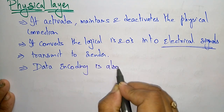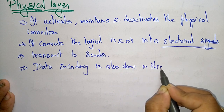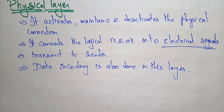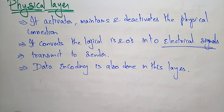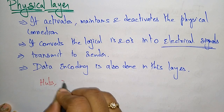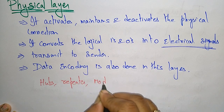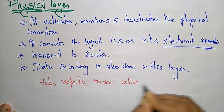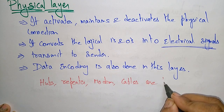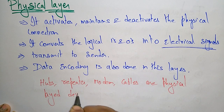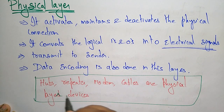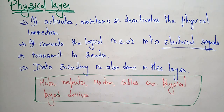The physical layer devices include hubs, repeaters, modems, and cables. These are all physical layer devices — hubs, repeaters, modems, and cables all come under the physical layer.